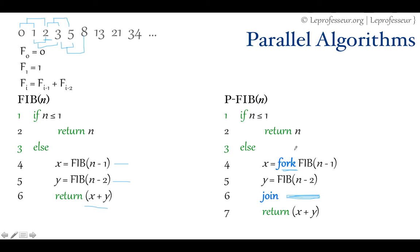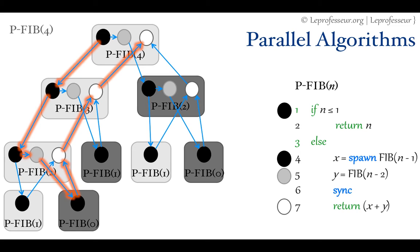We can visualize the computation in a form of a computational directed acyclic graph, where the circles - whether black, gray, or white - represent some set of instructions. You may call it a strand, or simply a set of instructions which can be executed. The solid black circle says this is a base case, or the case where at line number 4 we are forking. A spawn or fork is the same thing where we are creating the child threads.